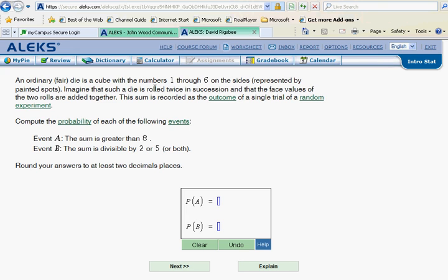Now imagine that such a die is rolled twice in succession and that the face values of the two rolls are then added together. This sum is recorded as the outcome of a single trial of a random experiment, and then they ask us two questions about those rolls.